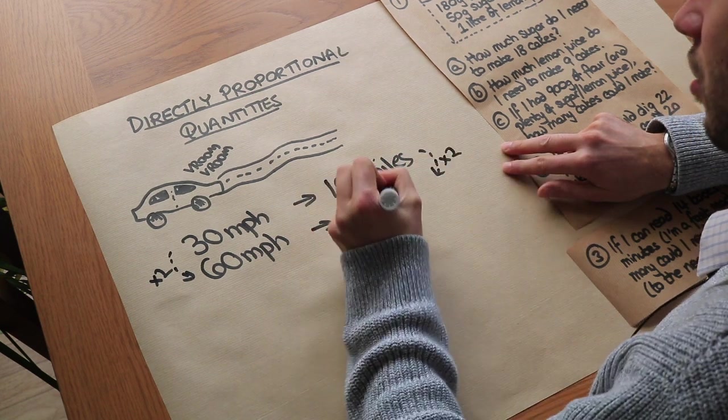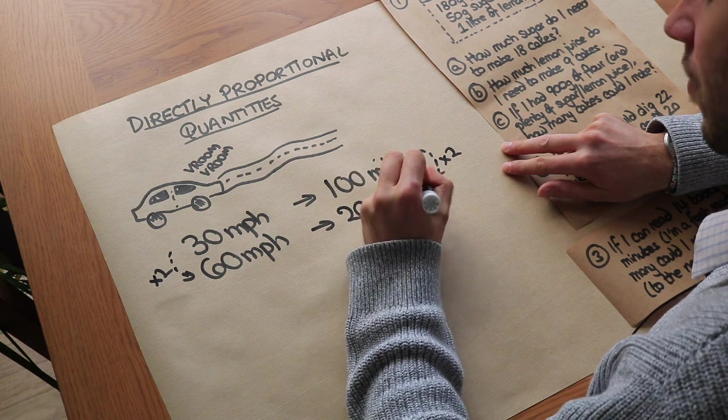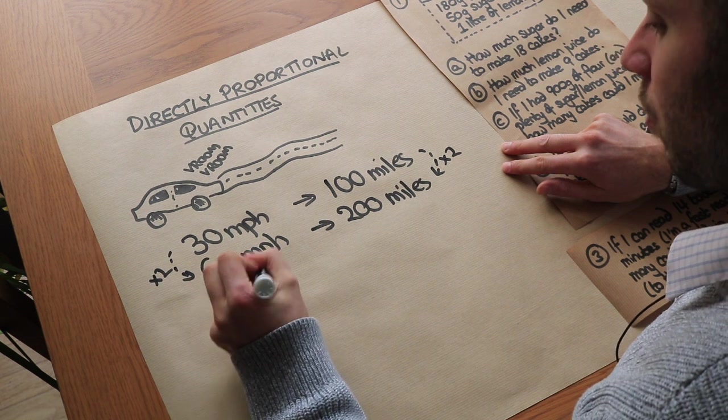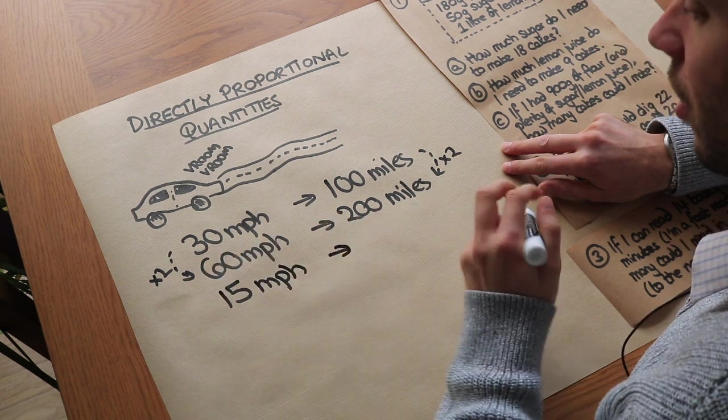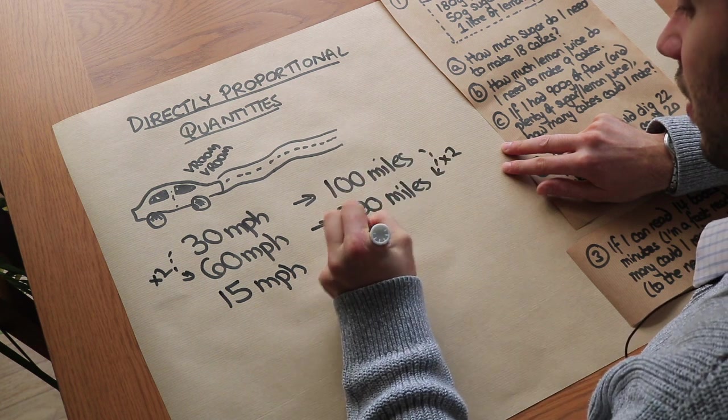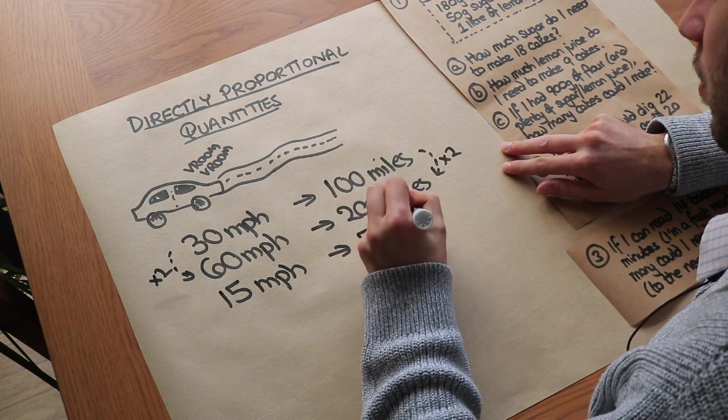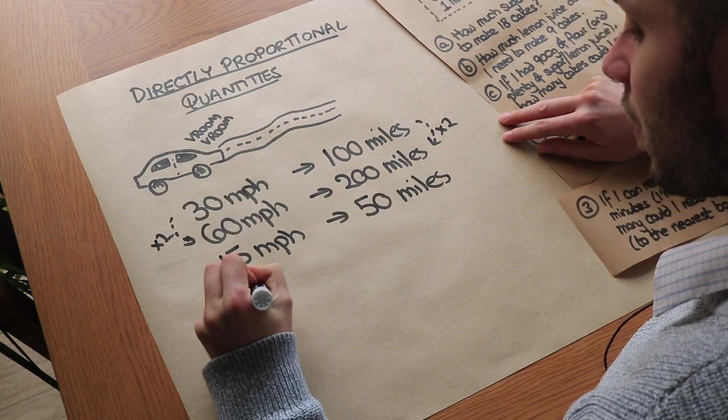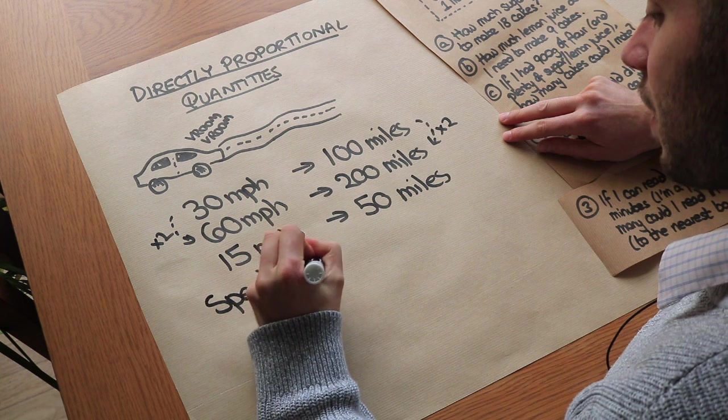What about if we halve the speed? So instead of 30 miles per hour we went 15 miles per hour. Well, we're going only half as far, so we'd only travel half as much distance, so we'd only go for 50 miles.